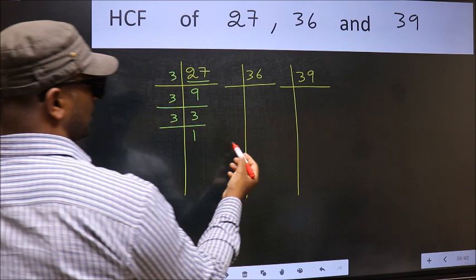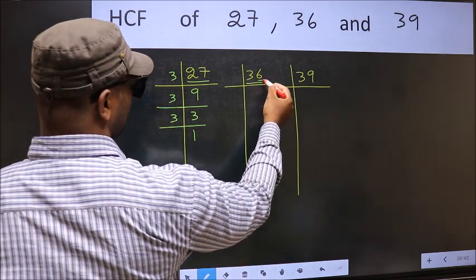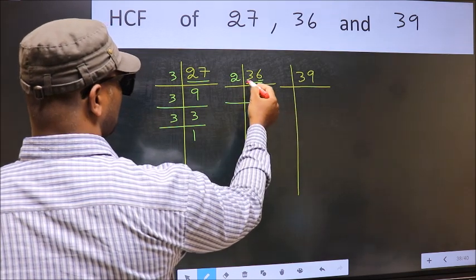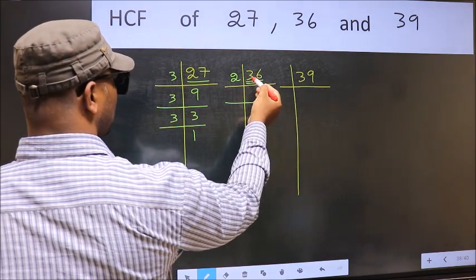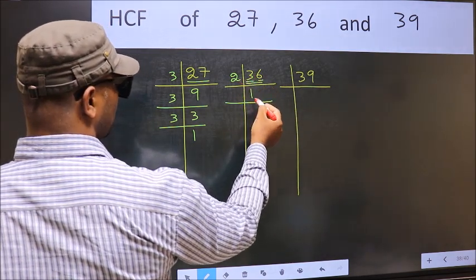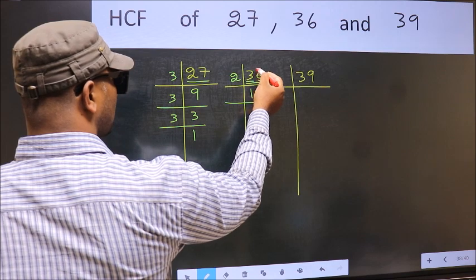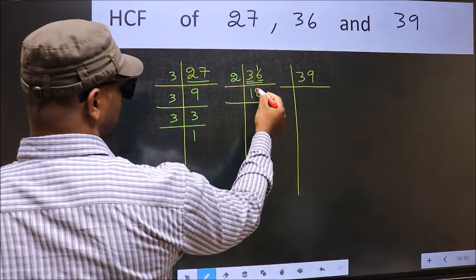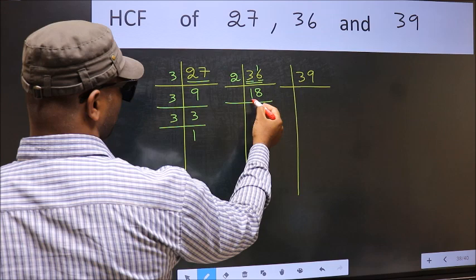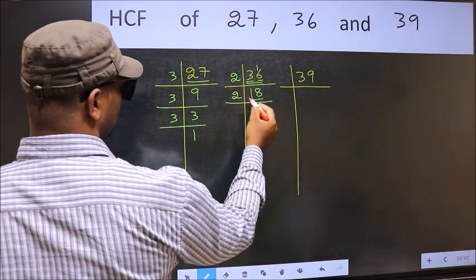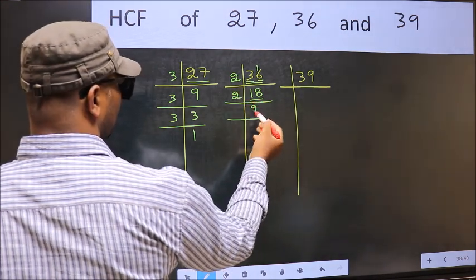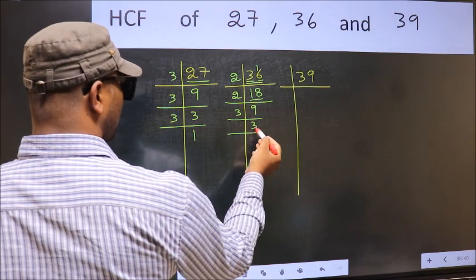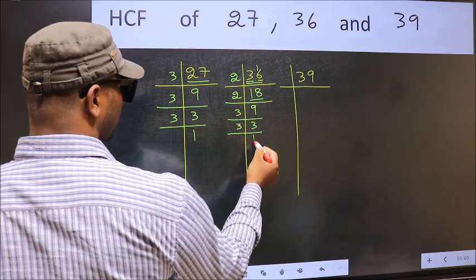Now the other number, 36. The last digit is 6, which is even, so take 2 as the divisor. Dividing gives us 18. Now 18 is 2 nines, so 18 = 2 × 9. And 9 is 3 threes, so 9 = 3 × 3. Now 3 is a prime number, so 3 = 3 × 1.